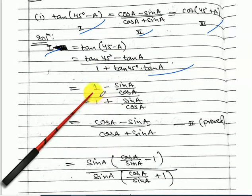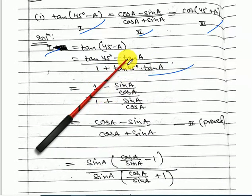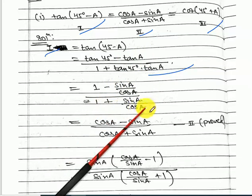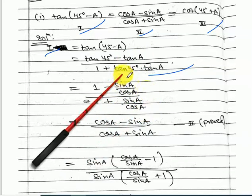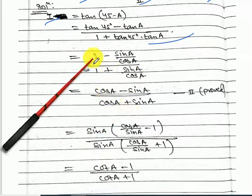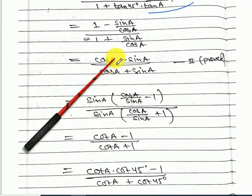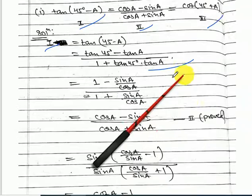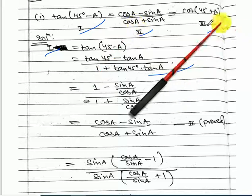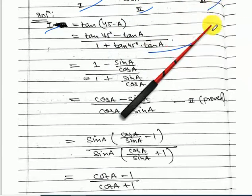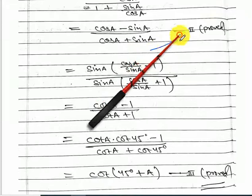You get 1 minus sin A upon cos A, all over 1 plus sin A upon cos A. Take the LCM for numerator and denominator using cos A, giving (cos A minus sin A) upon (cos A plus sin A). The second part is done.